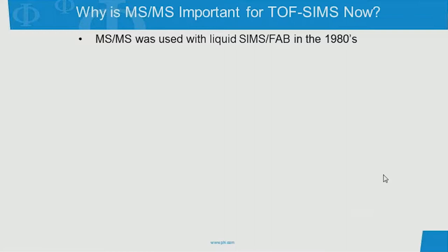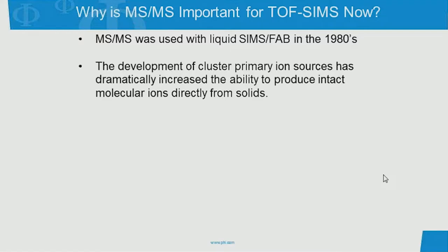Those of you that have been in the industry as long as I have might remember MS-MS was used in liquid SIMS, or FAB, back in the 1980s. But now we're finally introducing it to TOF-SIMS, and the main reason why is it's coming after the development of cluster primary ion sources. The introduction of these cluster primary ion beams to TOF-SIMS has dramatically increased the ability to produce large, intact molecular ions directly from solids.